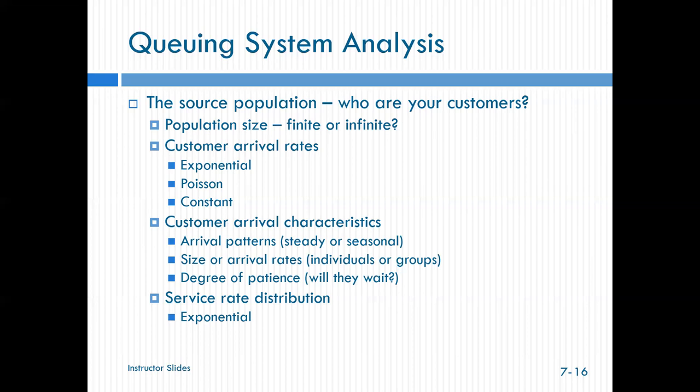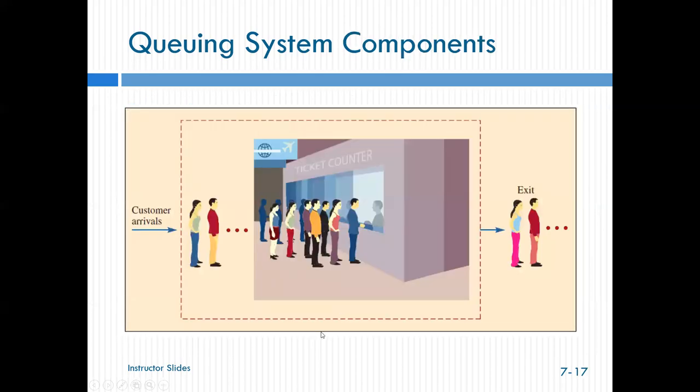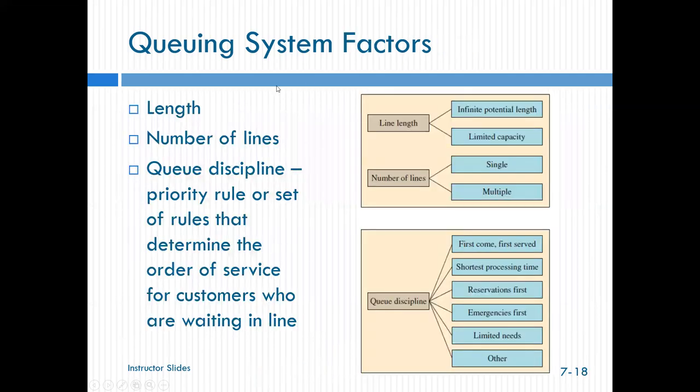Customer arrival characteristics. Is it steady or is it seasonal? What's the size or the arrival rates? Do they come as an individual or as a group or some mix of that? What's their degree of patience? Are they willing to get in line and wait? Are they going to not get in line? Are they going to get in line and then leave? And then what's our service rate distribution? Everything that we're going to look at is going to be an exponential service rate. So when we look at this queuing system, think of the service system from the time the customer gets in line till the time after they're served till when they exit the process. That is the service system.